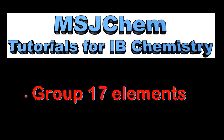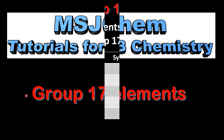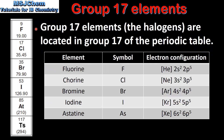This is MSJChem. In this video I will be looking at the group 17 elements. The group 17 elements, which are also known as the halogens, are located in group 17 of the periodic table.